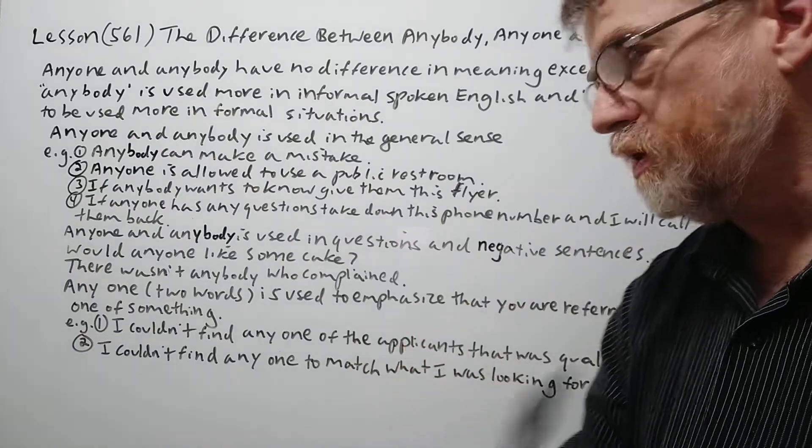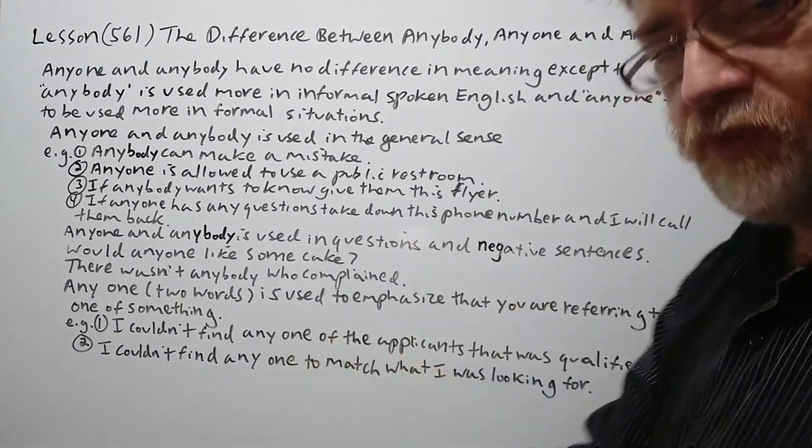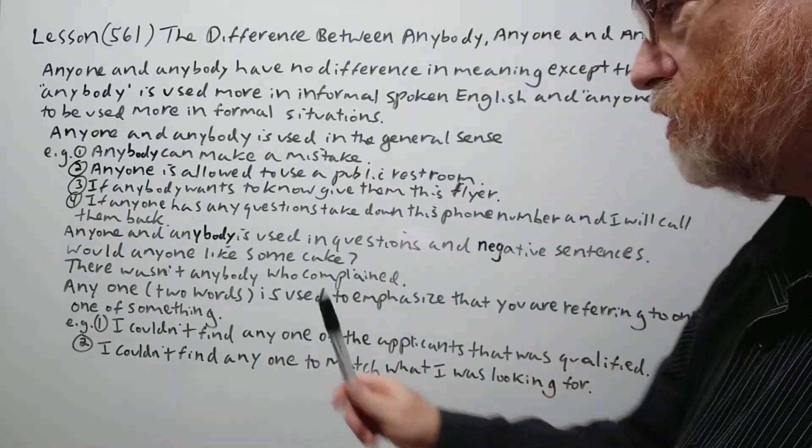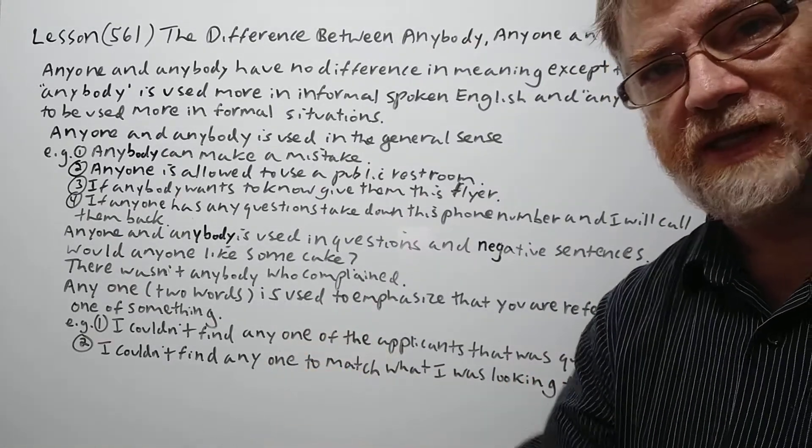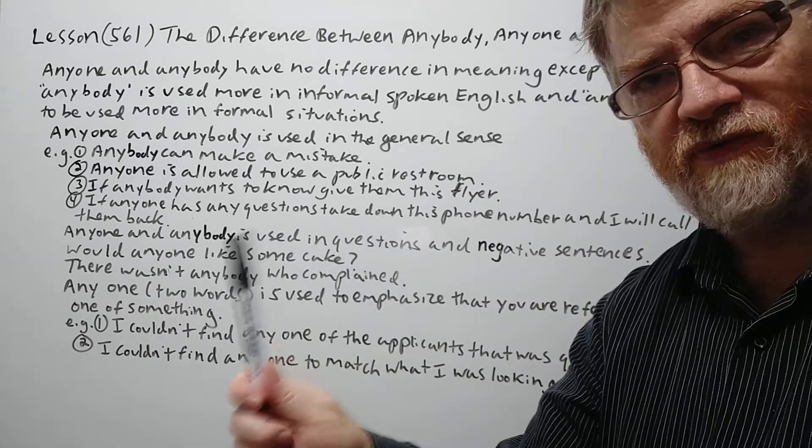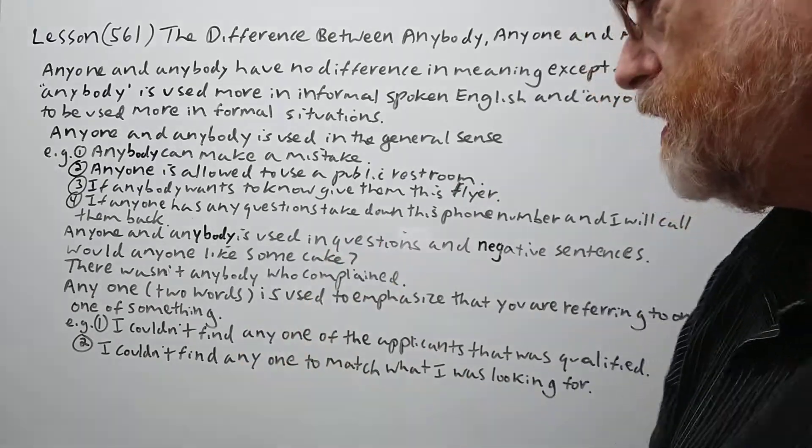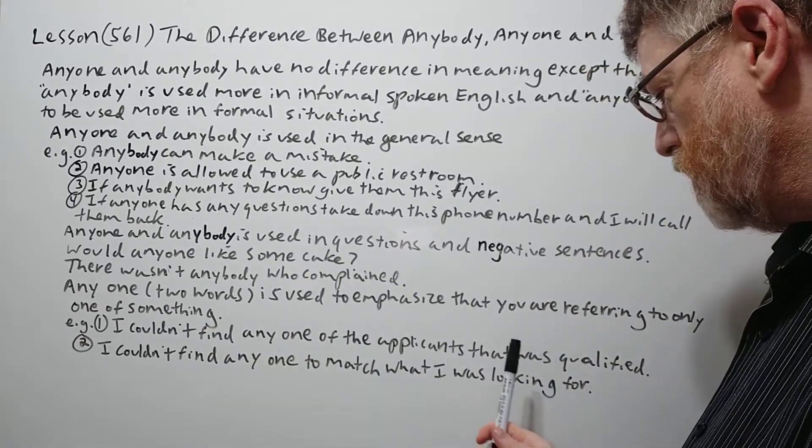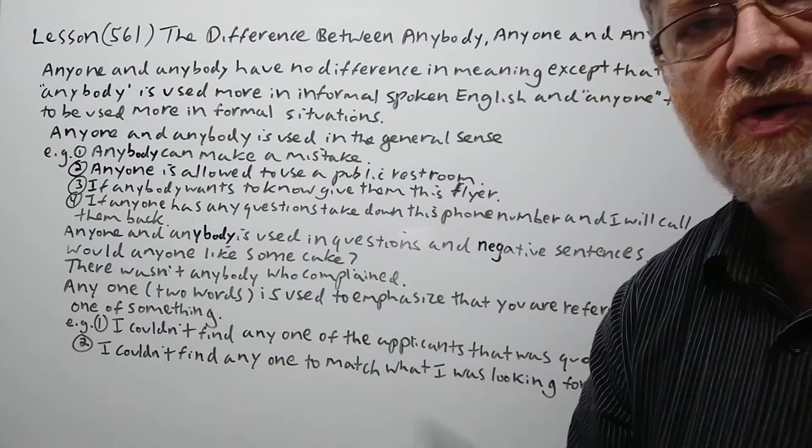Now let's look at any one, that is two words. Any one, two words, is used to emphasize that you are referring to only one of something. It's definitely not a general sense. You mean that you couldn't even find one of these. So I couldn't find any one of the applicants that was qualified.